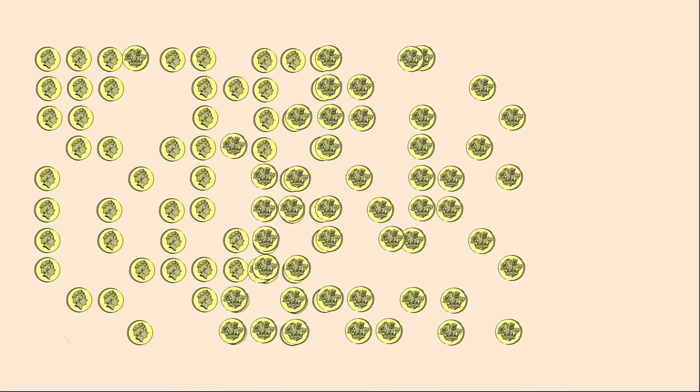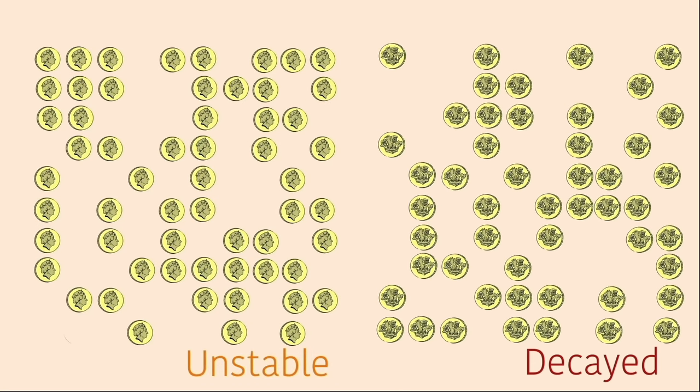So if we have 100 coins and they all start as heads — or stable nuclei — after one half-life, or one shake of the bag, roughly half, or 50 of the coins, should have turned to tails. Let's have a go. And we see that's happened. So we say the ones that have turned to tails have decayed.